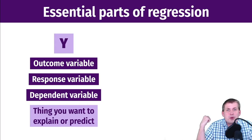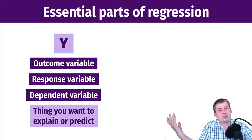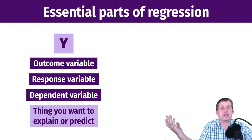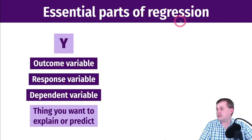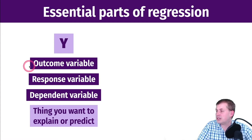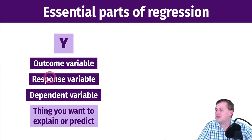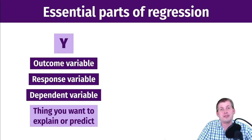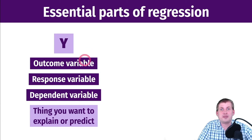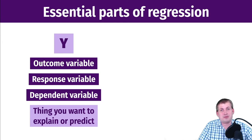What we want to talk about first are the essential parts of regression. You have what is called the outcome variable — you may have heard this called other things, most likely a dependent variable. This is most commonly used in social science. In machine learning, you have outcome variables and explanatory variables. I technically like 'outcome' better than 'dependent' mostly because I can never remember which one is Y and which is X.